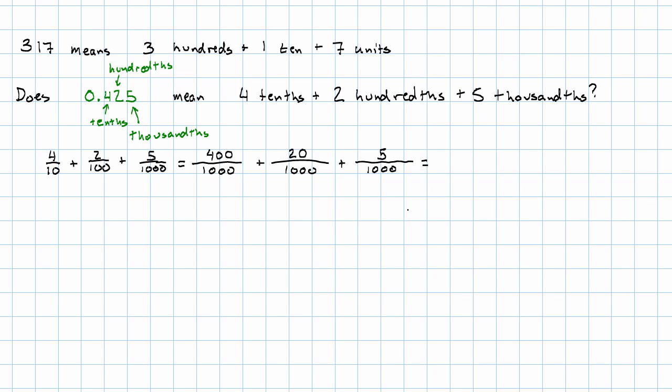What fraction is that going to be then? Add together the numerators. Four hundred plus twenty plus five is just four hundred twenty-five. Denominator, still a thousand. Four hundred twenty-five thousandths, three digits after the decimal place, yes, yes it does.